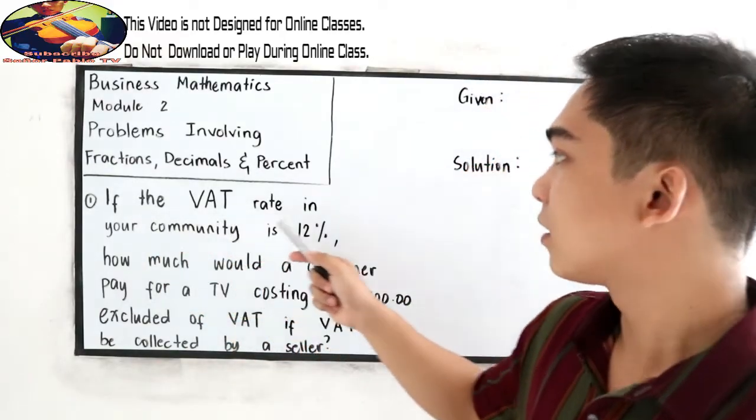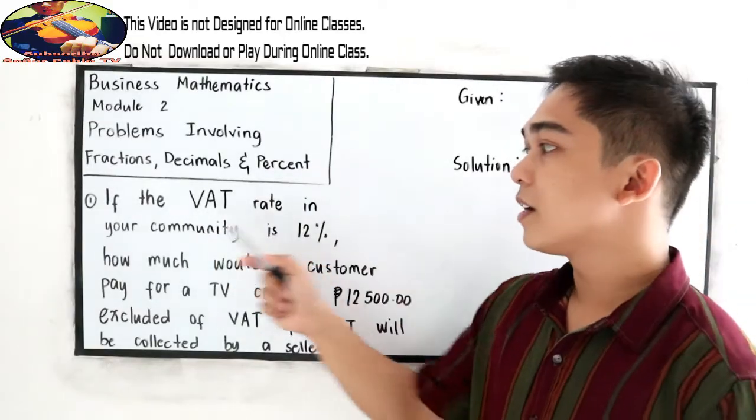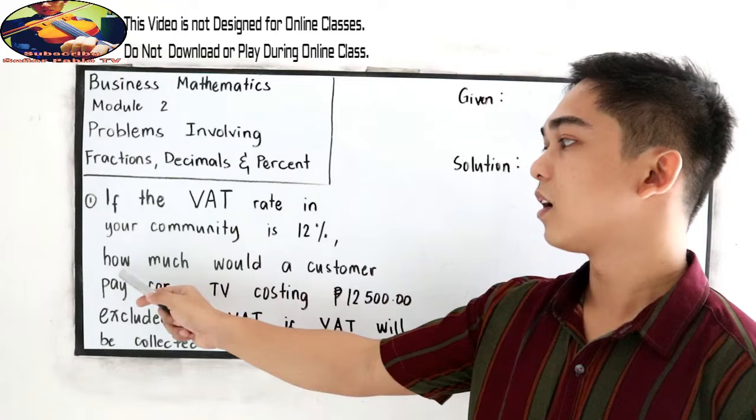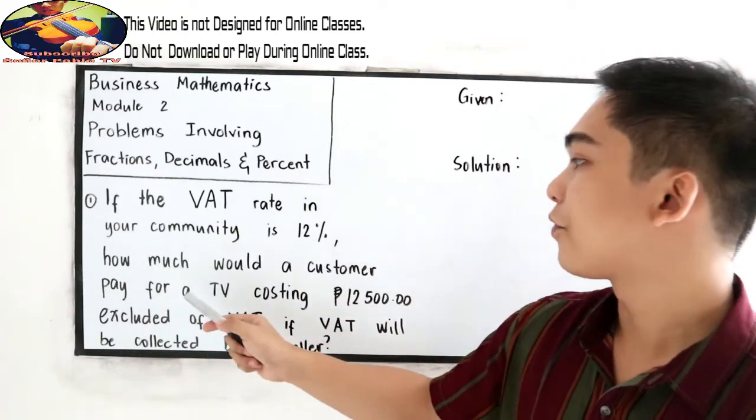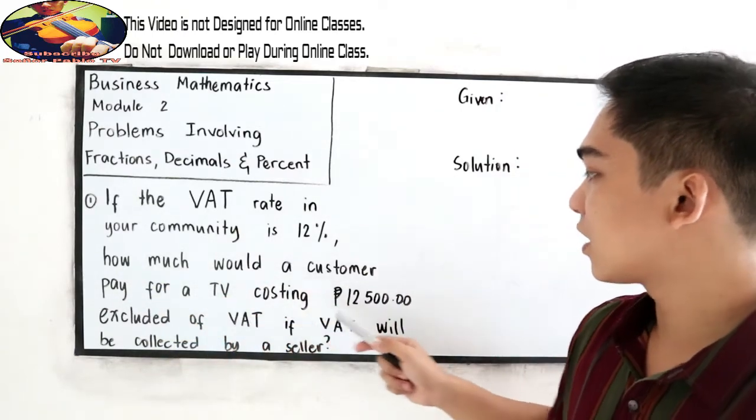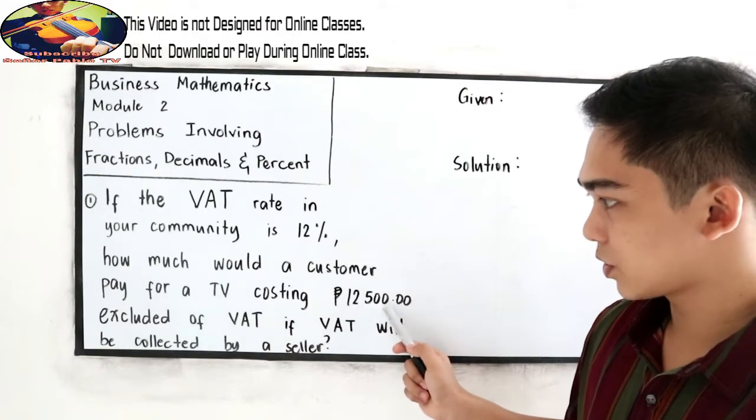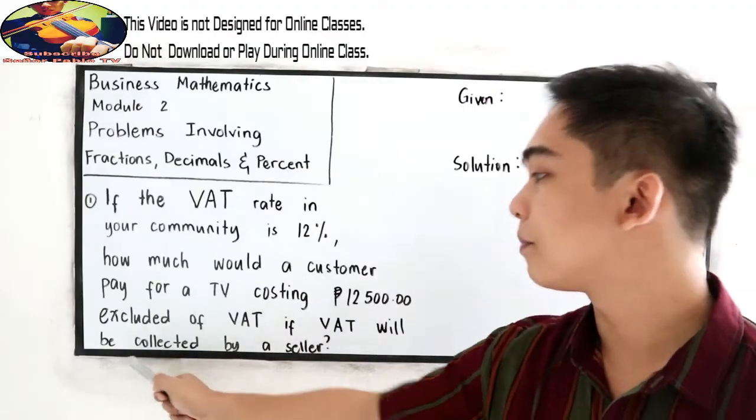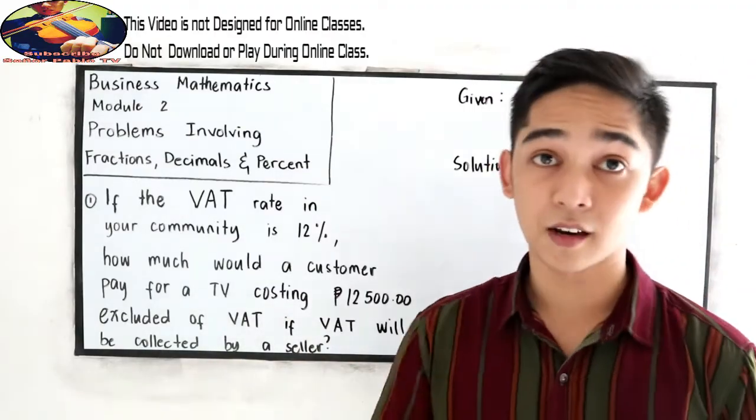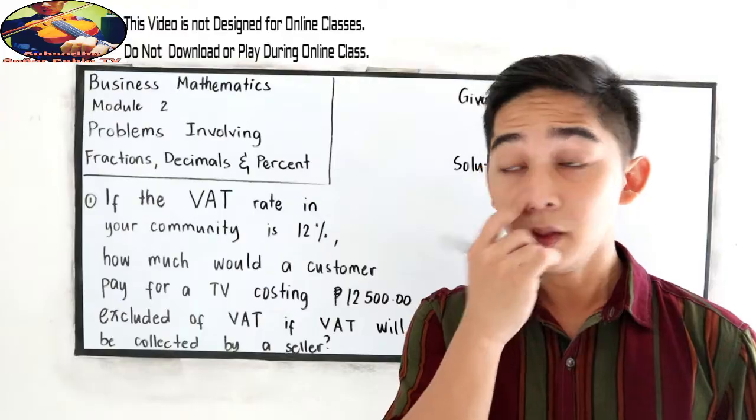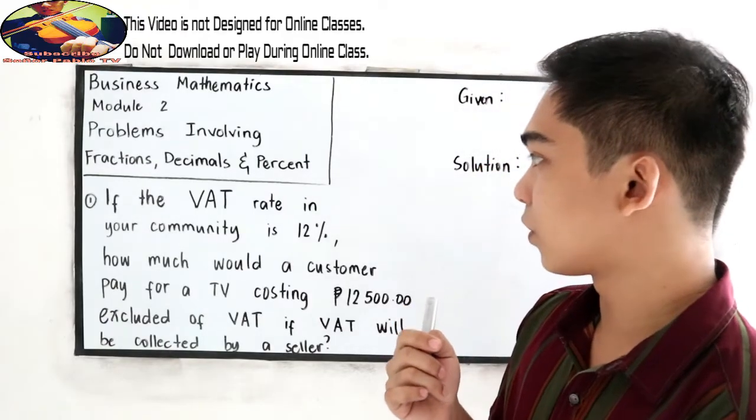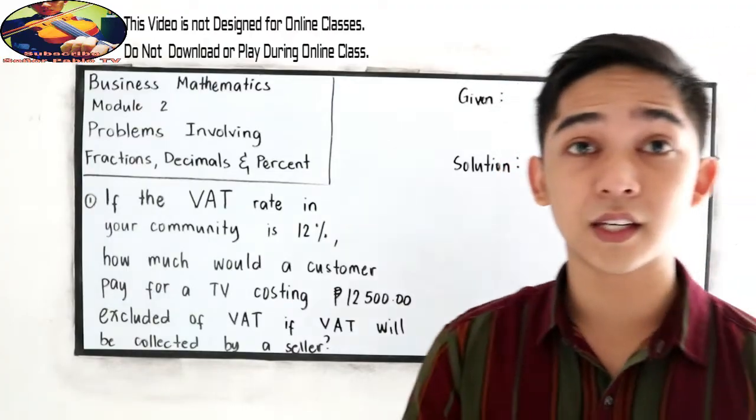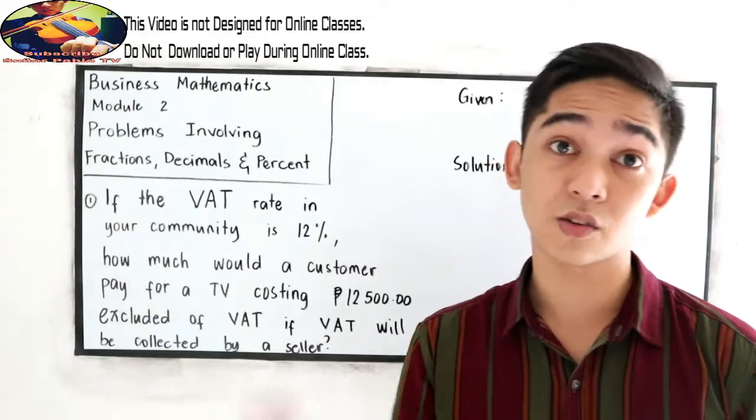If the VAT rate in your community is 12%, how much would a customer pay for a TV costing 12,000 pesos, excluded of VAT if VAT will be collected by a seller? The cost of TV is 12,000 pesos, excluding the VAT.